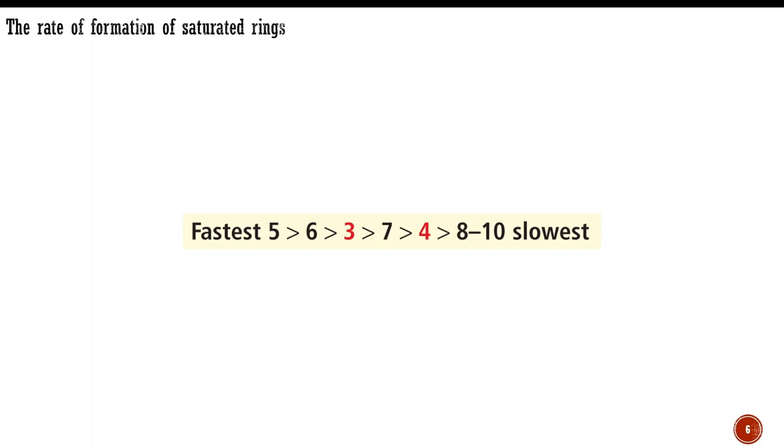The reason for the two superimposed trends is two opposing factors. Firstly, small rings form slowly because forming them introduces ring strain. This ring strain is there even at the transition state, raising its energy and slowing down the reaction. The activation energy for forming a 3-membered ring is very high due to strain, but decreases as the ring gets larger.